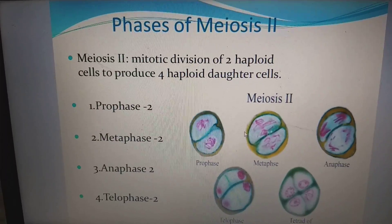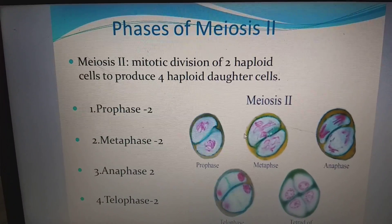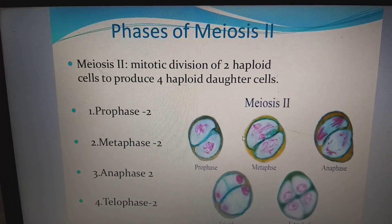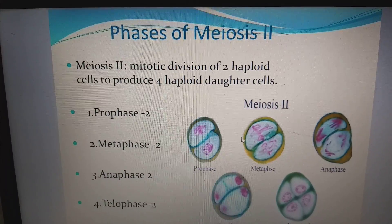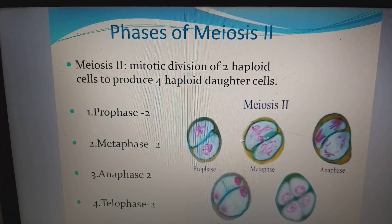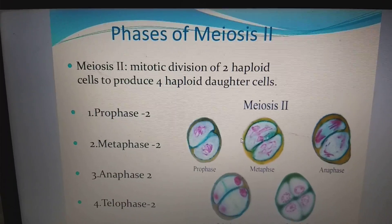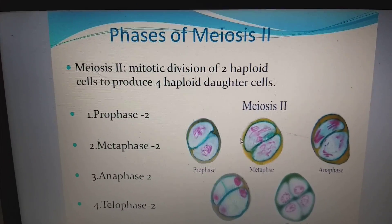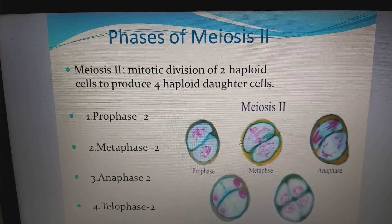Phases of Meiosis II: in meiosis II, mitotic divisions of the two haploid cells produce four daughter cells. The phases are prophase 2, metaphase 2, anaphase 2, and telophase 2. This division is called equational division, which is very similar to mitosis.